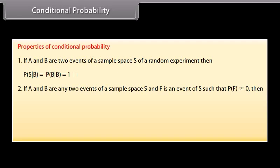Property 2: If A and B are any two events of a sample space S and F is an event of S such that P(F) ≠ 0, then P(A ∪ B | F) = P(A|F) + P(B|F) − P(A ∩ B | F).